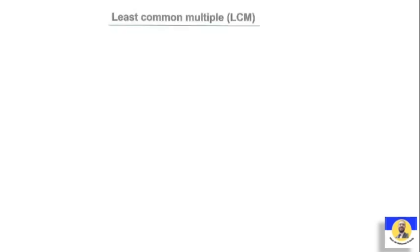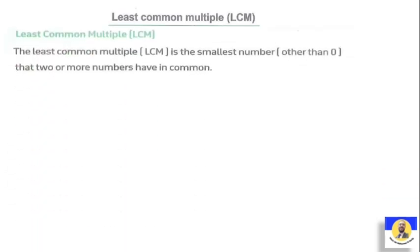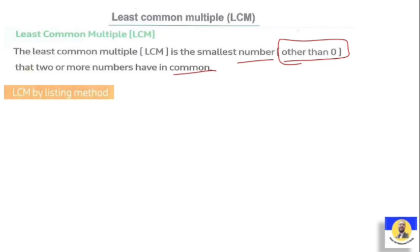Next: the Least Common Multiple. The LCM is the smallest common multiple — the smallest number other than zero that two or more numbers have in common. Just like we learned greatest common factors using two methods, here we can also find the LCM using two methods.